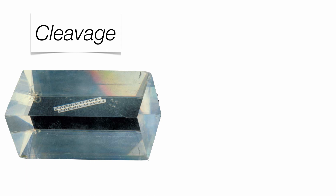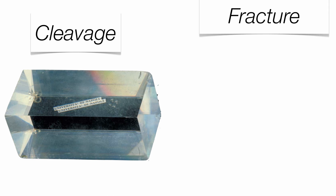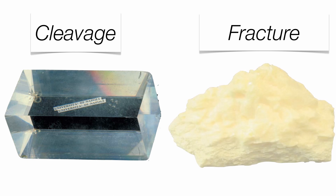If you have flat parallel sides to a mineral sample, it's most likely going to be cleavage. If you have an uneven surface throughout the entire mineral, you're dealing with fracture. It's very important to know the difference between the two.